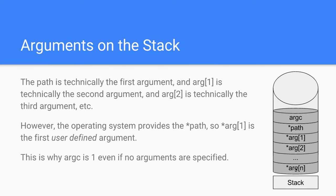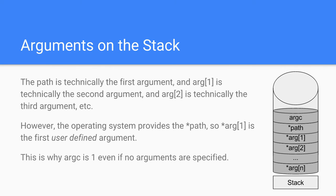So the path is technically the first argument, and arg1 is technically the second argument, then arg2 is technically the third argument. However, the operating system provides the path. So arg1 is the first user-defined argument. This is why argc is one even if no arguments are specified, because the path is always specified automatically by the operating system and it counts as the first argument.